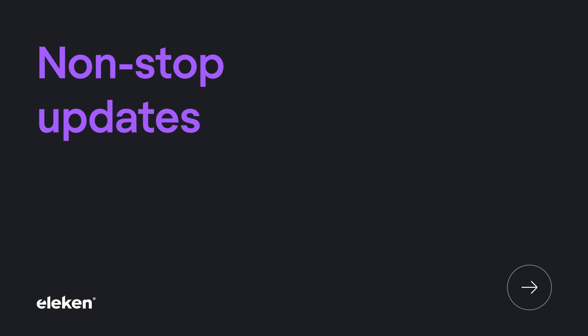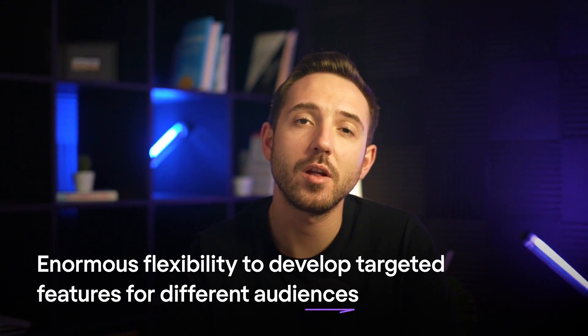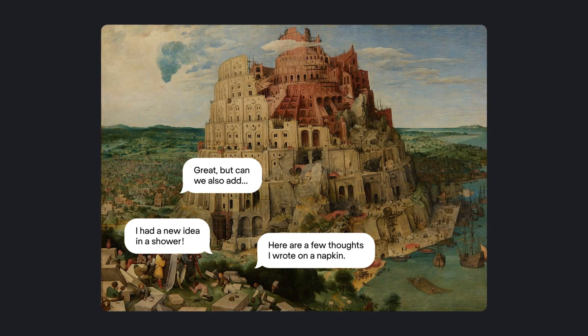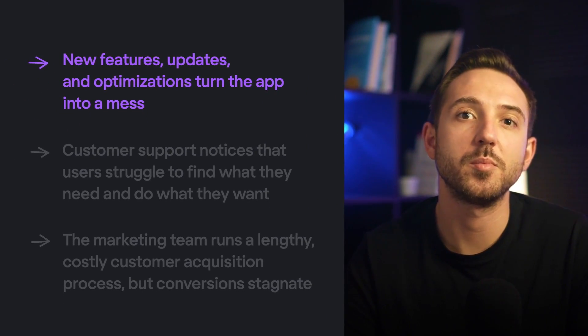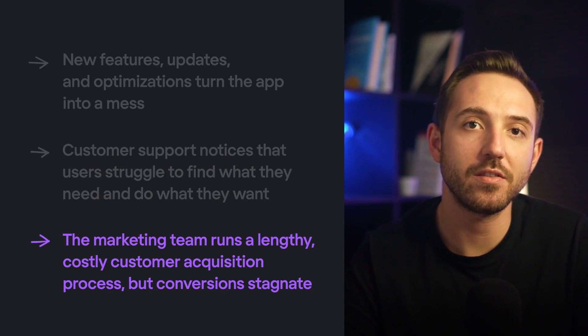One other important SaaS distinction is non-stop updates. With the SaaS distribution model, you don't need to make new releases every year. You can make small upgrades to polish the product and run 24 tests simultaneously, giving you enormous flexibility to develop targeted features for different audiences. Facebook, for example, has different offers for regular users and business owners to monetize their audience better. The flip side is that by adding more and more little things without control, you risk turning your SaaS app into a bulky, unusable tower of trouble. New functionality often goes beyond the original project scope, shattering the app's information architecture and consistency. Customer support notices that users struggle to find what they need, and the marketing team runs a costly customer acquisition process when conversions stagnate. If some of those symptoms sound familiar, it's time to think of a product redesign. If you're interested, I have a playlist on that topic — please check it out.